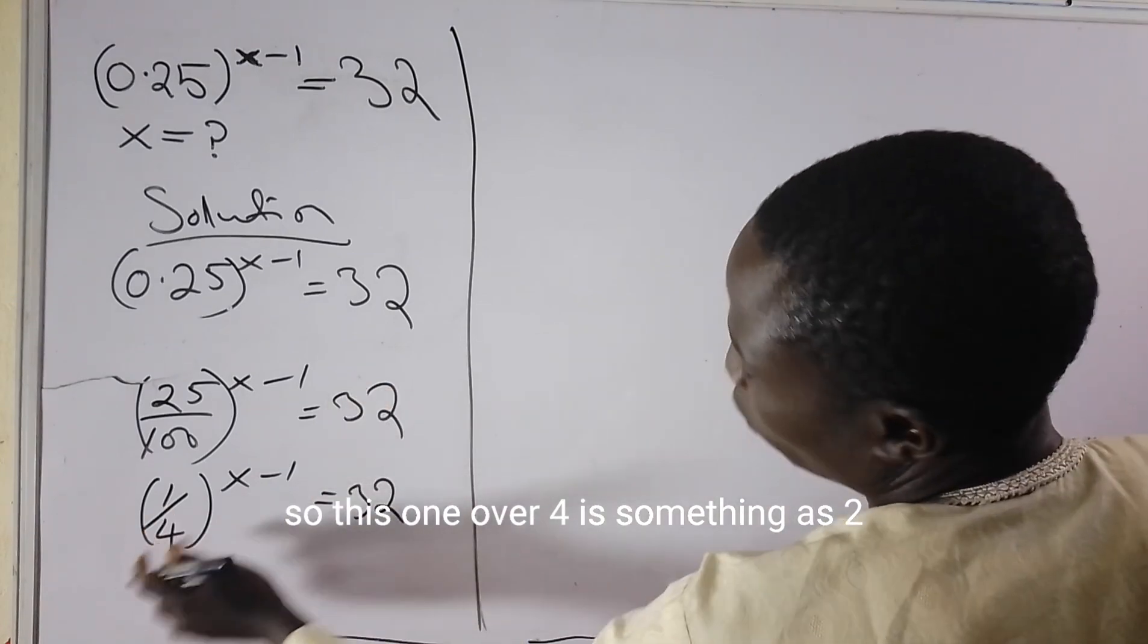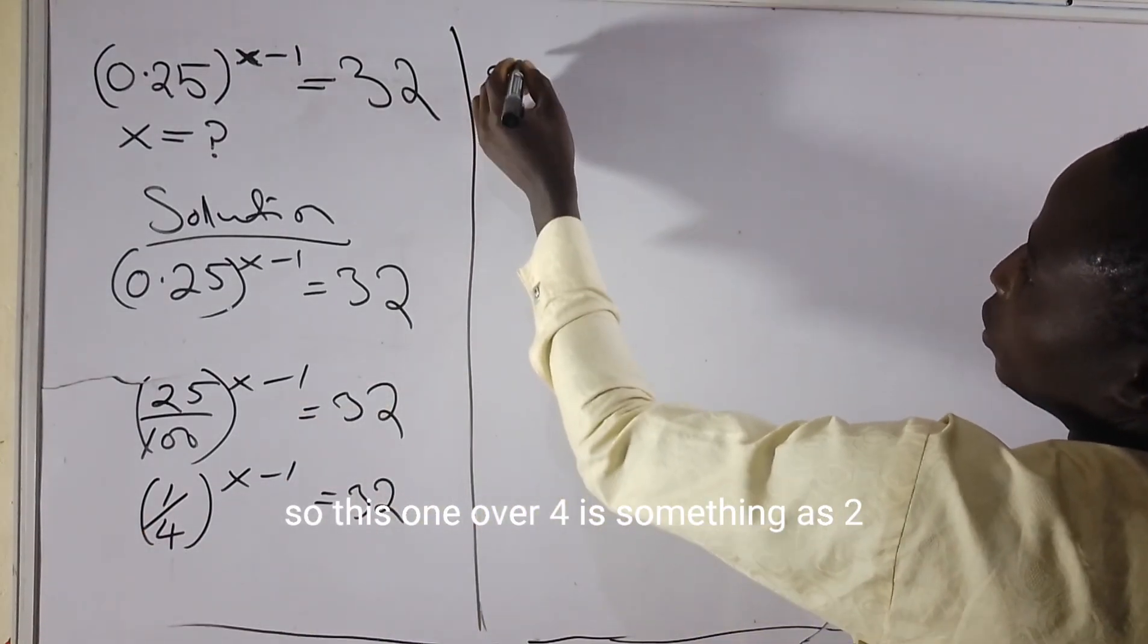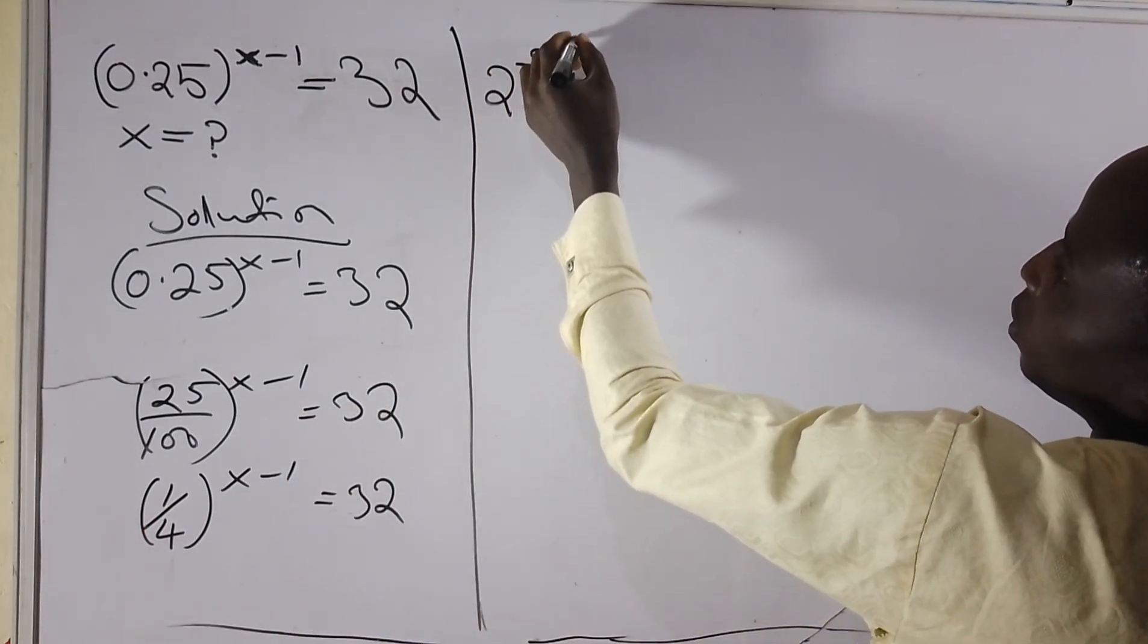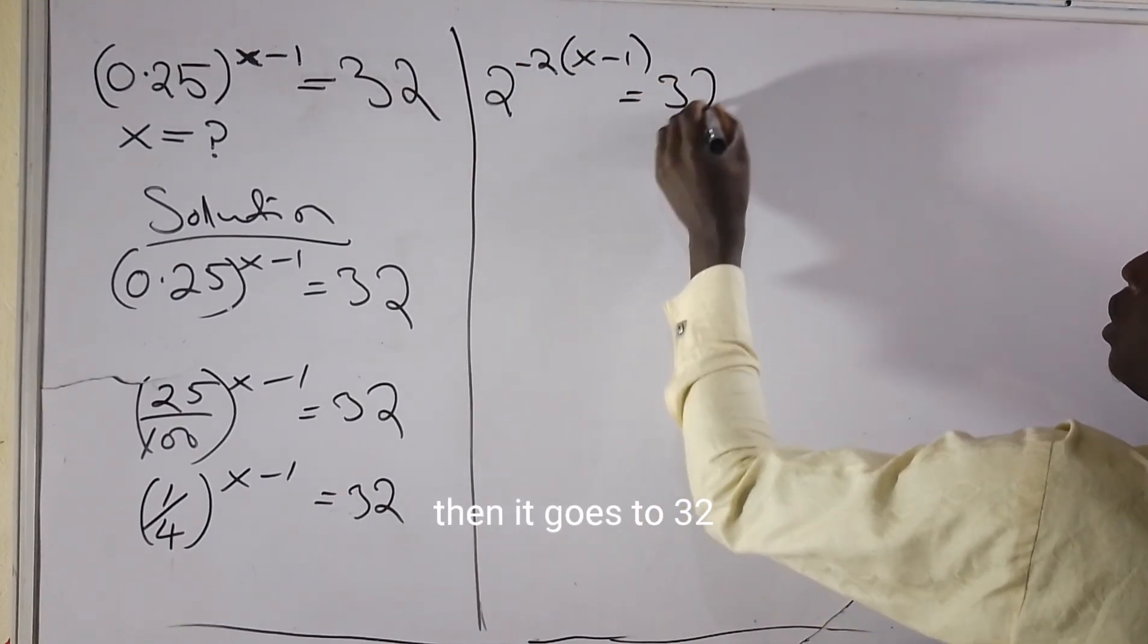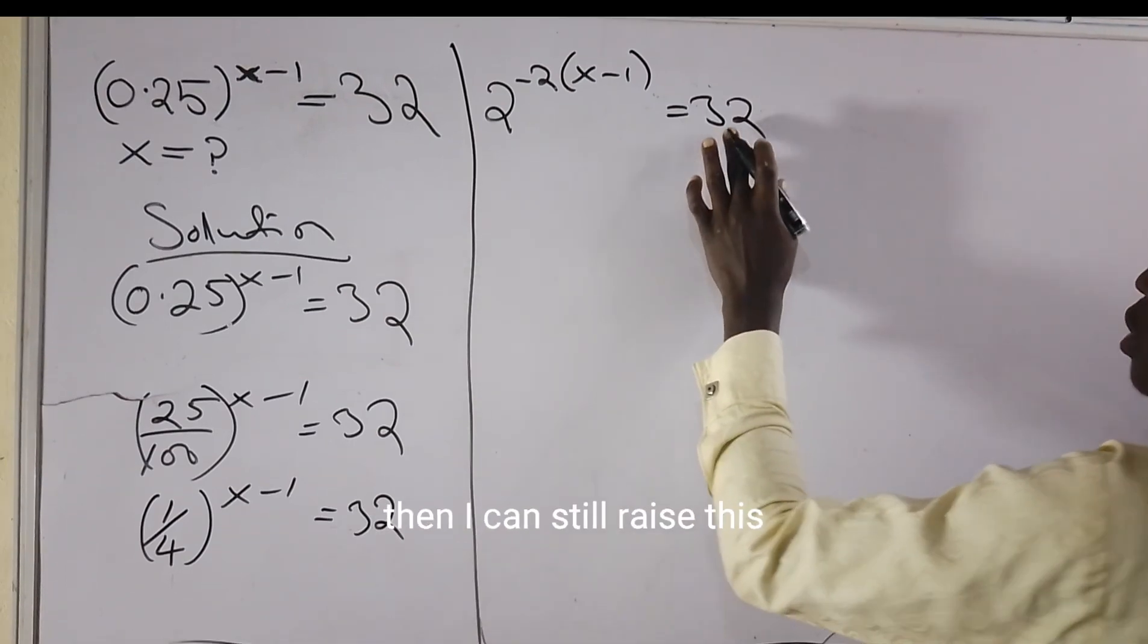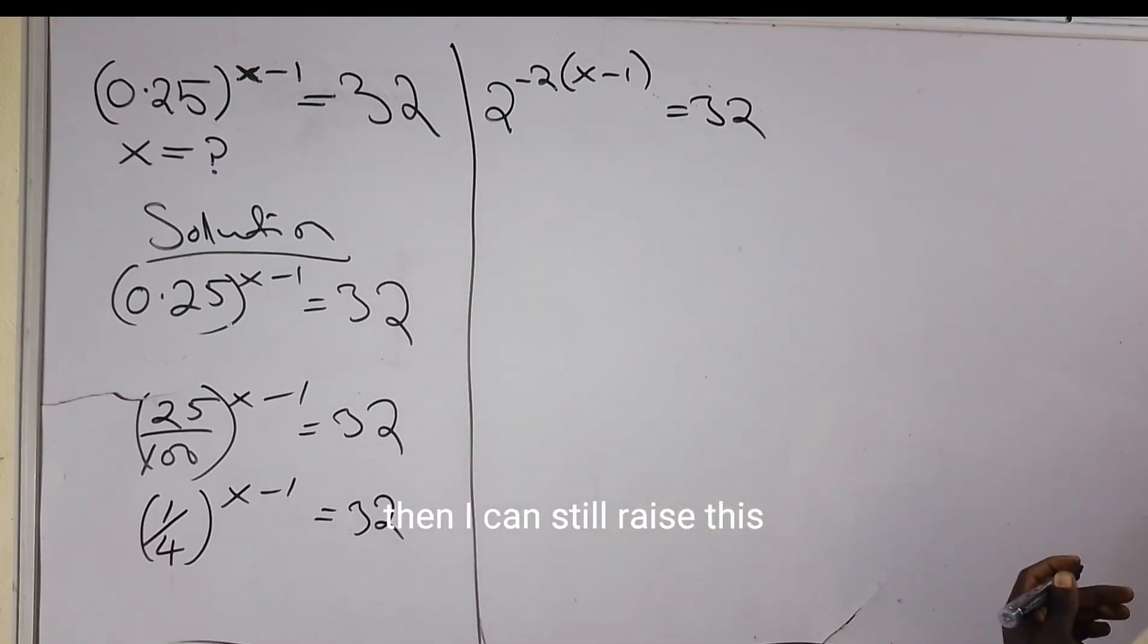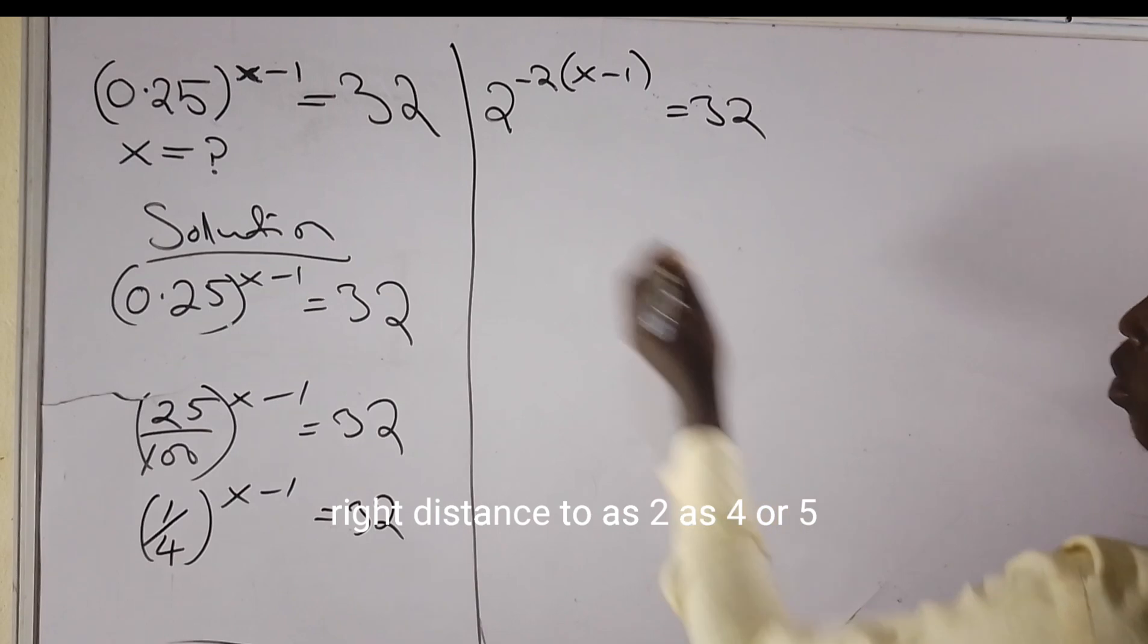So this 1 over 4 is the same as 2 raised to the power minus 2. Then open bracket x minus 1, and it equals 32. Then I can write this 32 as 2 raised to the power of 5.